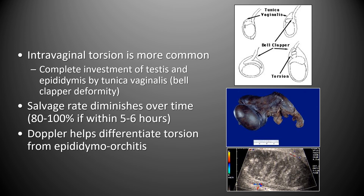Of the two types of torsion, intravaginal torsion is more common. This occurs when there is complete investment of the testis and epididymis by the tunica vaginalis, allowing it to rotate within the tunical sac — the so-called bell clapper deformity. The salvage rate of testicular parenchyma from ischemia is 80% to 100% if surgery is performed within 5 to 6 hours after onset of symptoms.